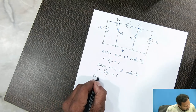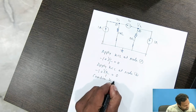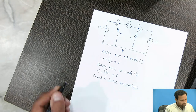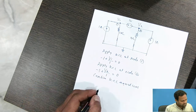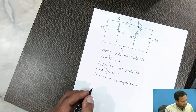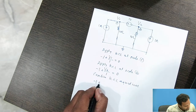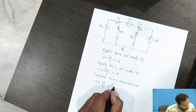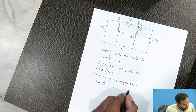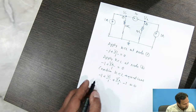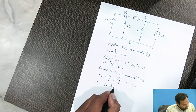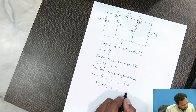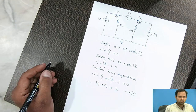Now combine the KCL equations and write a single equation. Combining the two equations gives: −1 + V1/1 + V2/1 − 1 = 0, which simplifies to V1 + V2 = 2. We will call this equation number 1.